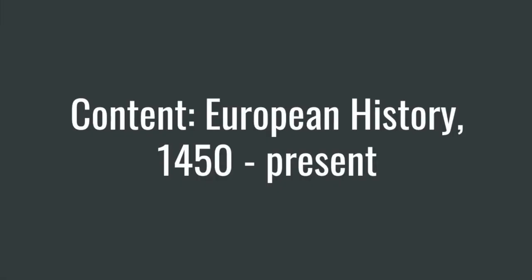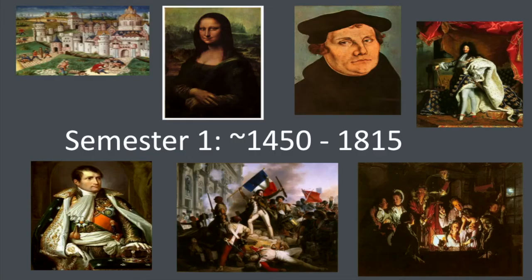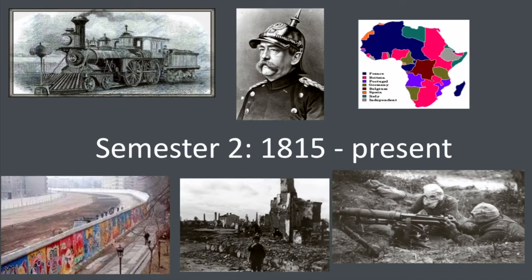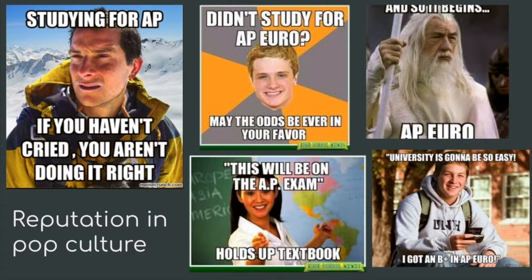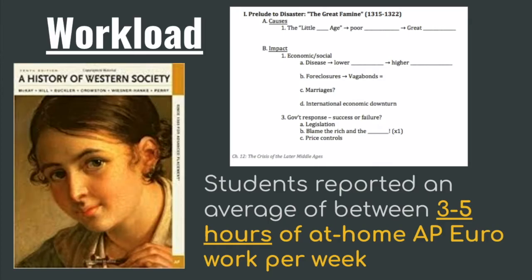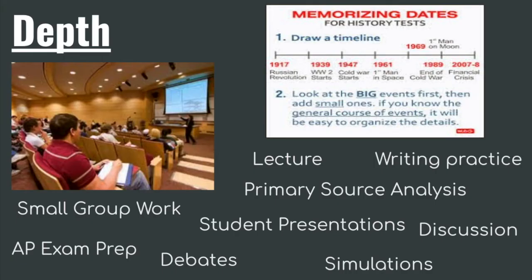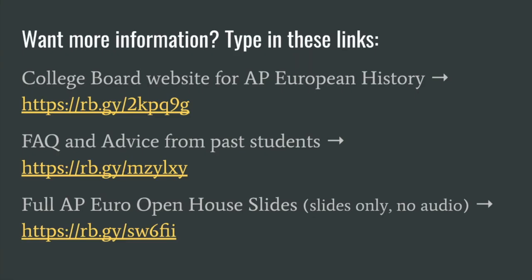With either Western Civ or AP Euro you will be exploring great content of European history. With AP Euro you should expect between three to five hours of reading per week. The reading is critical given the amount of information to cover before the exam date, and it also allows for more time in class to apply the material through activities. If you're interested in more information, please follow the links provided.